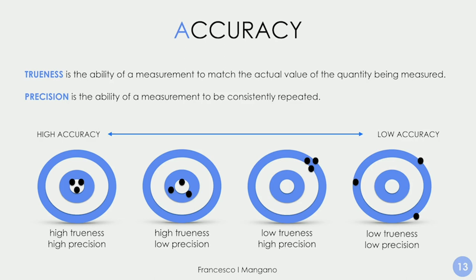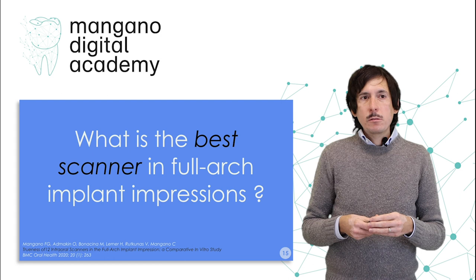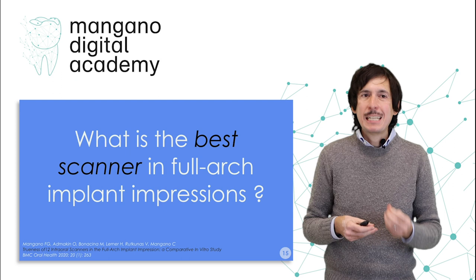When we look at the literature, the only problem with implant prosthodontics is related to the full arch, because most literature reviews say that intraoral scanners are not sufficiently accurate for capturing optical impressions for the fabrication of long-span restorations such as full arches. My recently published study in BMC Oral Health had to deal with this very important aspect: what is the best scanner for full arch implant impression?